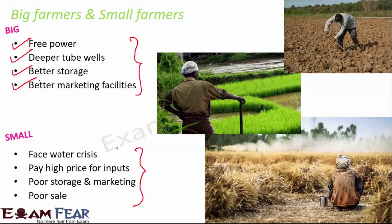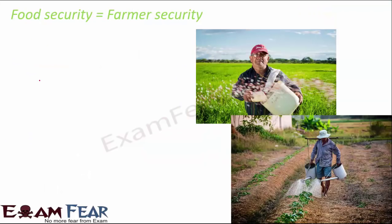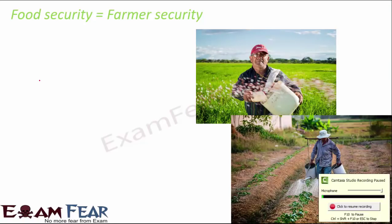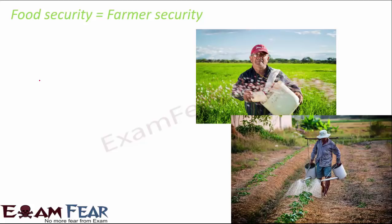Because of these differences, rich farmers gradually become richer and poor farmers become poorer, widening the gap between them. Big farmers start controlling the market — they are rich, so they influence and decide market prices. They get all the power while poor farmers suffer. For food security, we cannot ignore these poor farmers; we need to give them security as well.